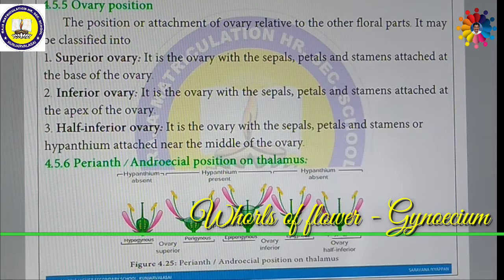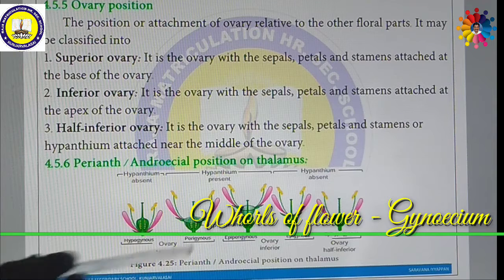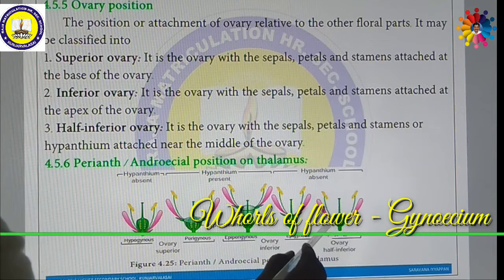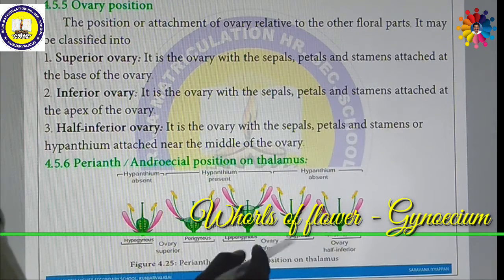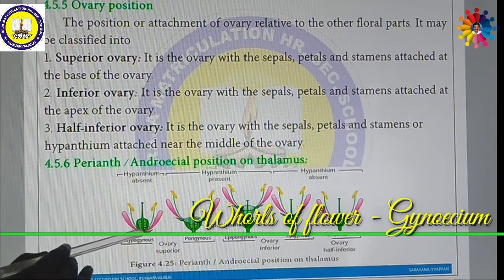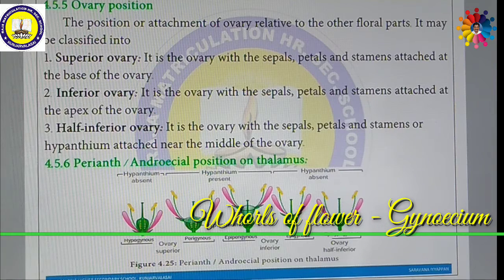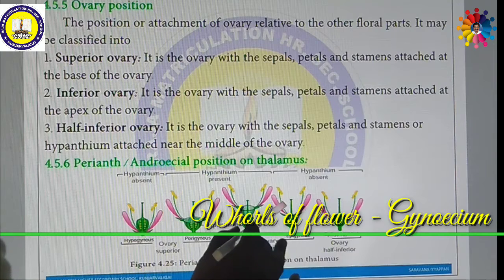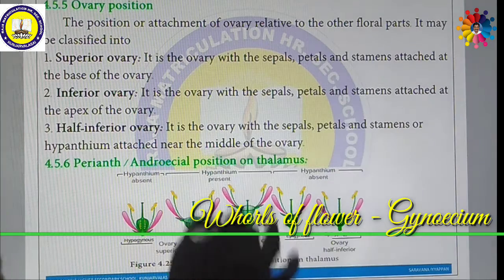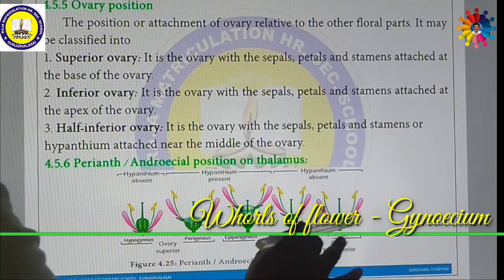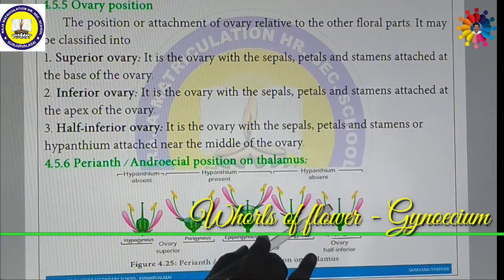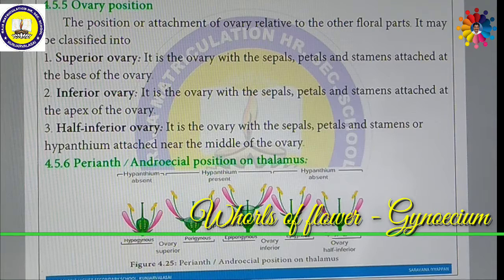Then, what is half-inferior? In a half-inferior ovary, the sepals, petals, and stamens — or even the hypanthium — are attached near the middle of the ovary. So if the attachment is at the base or below the ovary, it is superior and hypogynous. If attached above, it is inferior and epigynous. If attached at the middle, it is half-inferior. Based on ovary position, these are classified into three types.